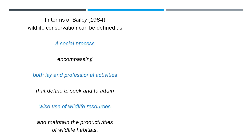Succession is the replacement of one ecological community by another at the same place over a period of time, until a final community comes in place which stabilizes with the prevailing environmental conditions of the area. Initially a pioneer community establishes itself, which is replaced by a second, then a third community, and ultimately a final community known as the climax community stabilizes with the prevailing environmental conditions.